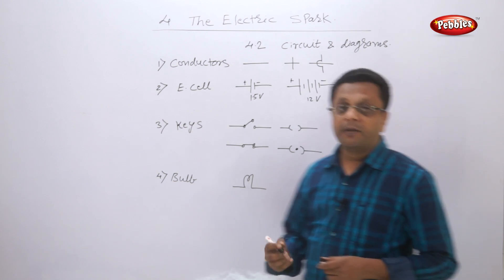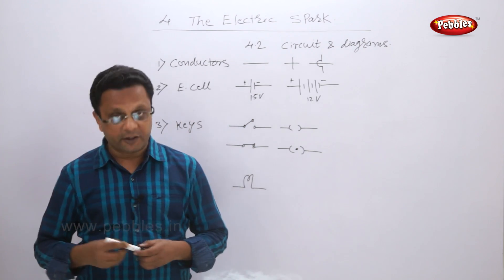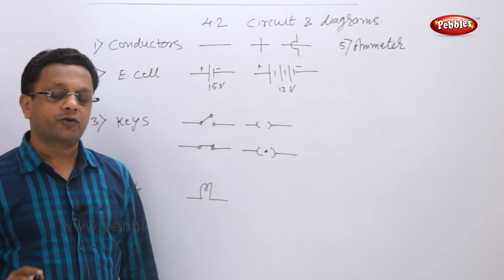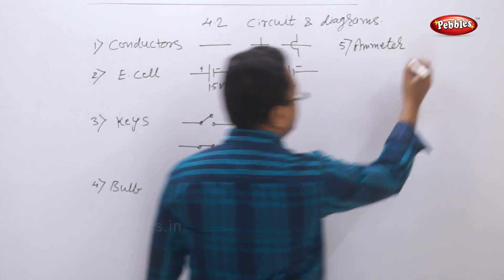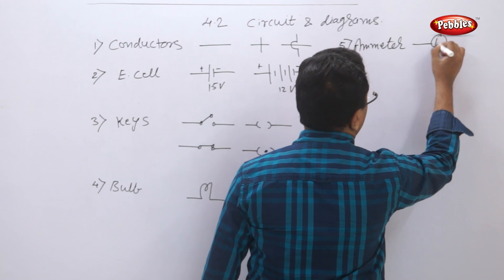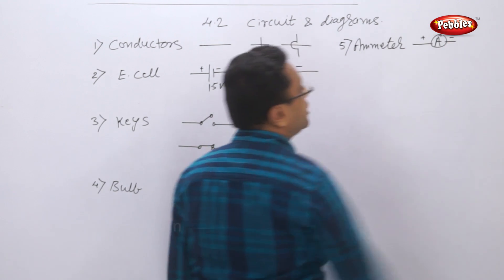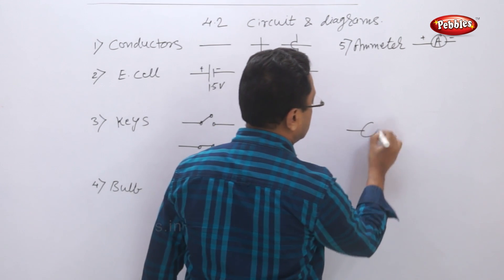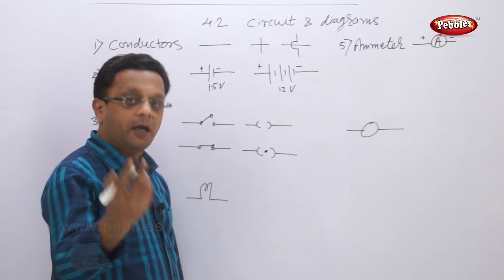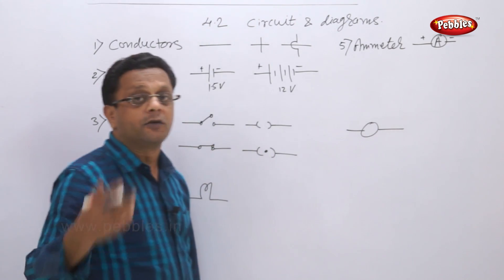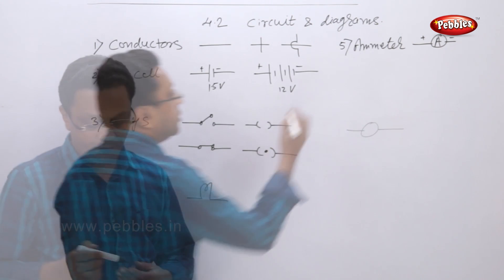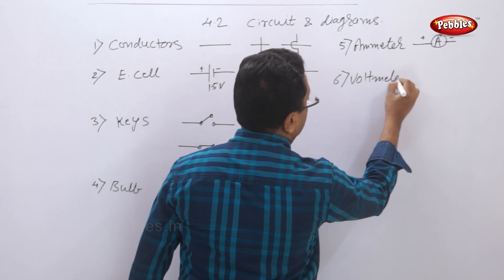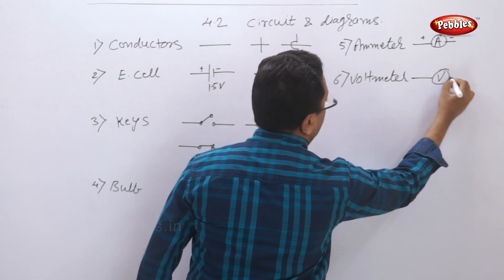Now we have to show some meters — we use some meters in an electric circuit. The ammeter is used for measuring electric current. Any meter is generally shown as a circle with a letter inside: if it is an ammeter, you write 'A'; if it is a voltmeter, you write 'V'. The voltmeter is used to measure voltage or potential difference.